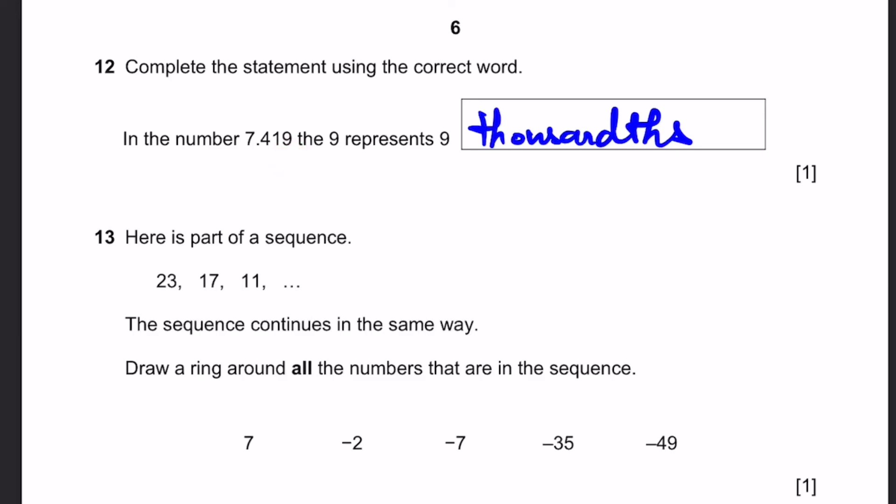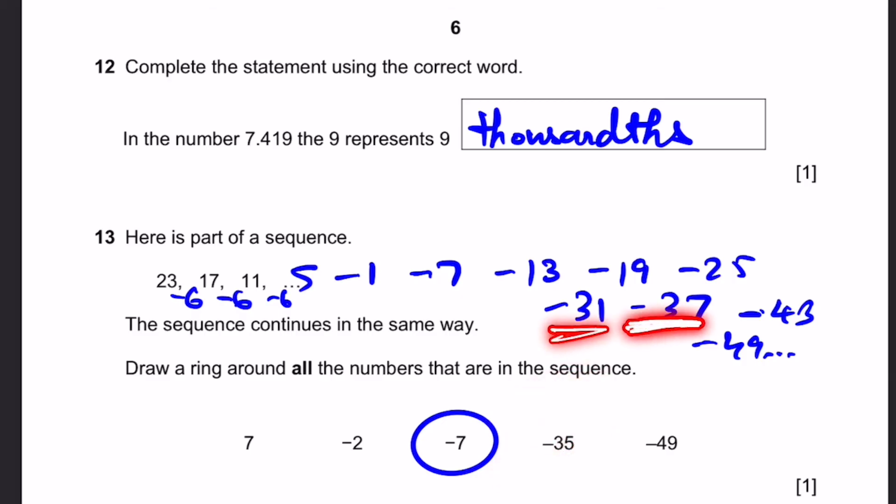Question 13. Here is part of a sequence: 23, 17, 11, dot dot dot. The sequence continues in the same way, draw a ring around all the numbers that are in the sequence. Every time we go to the next term, we subtract 6. So if we subtract 6 again, we'll get 5, and then minus 1, minus 7. We could go really far. We could go as far as anyone wanted: minus 25, minus 31, minus 37, minus 43, minus 49. I'm going to go only till here, so that I can go through all the options here. There's no 7 in these terms. There's no minus 2 in these terms. But there is a minus 7, so we can draw a ring around that. There's no minus 35. We can see it's minus 31, then immediately minus 37, so it's not there. And minus 49 is the last term I wrote, which is why I continued all the way up till here. That's our answer.